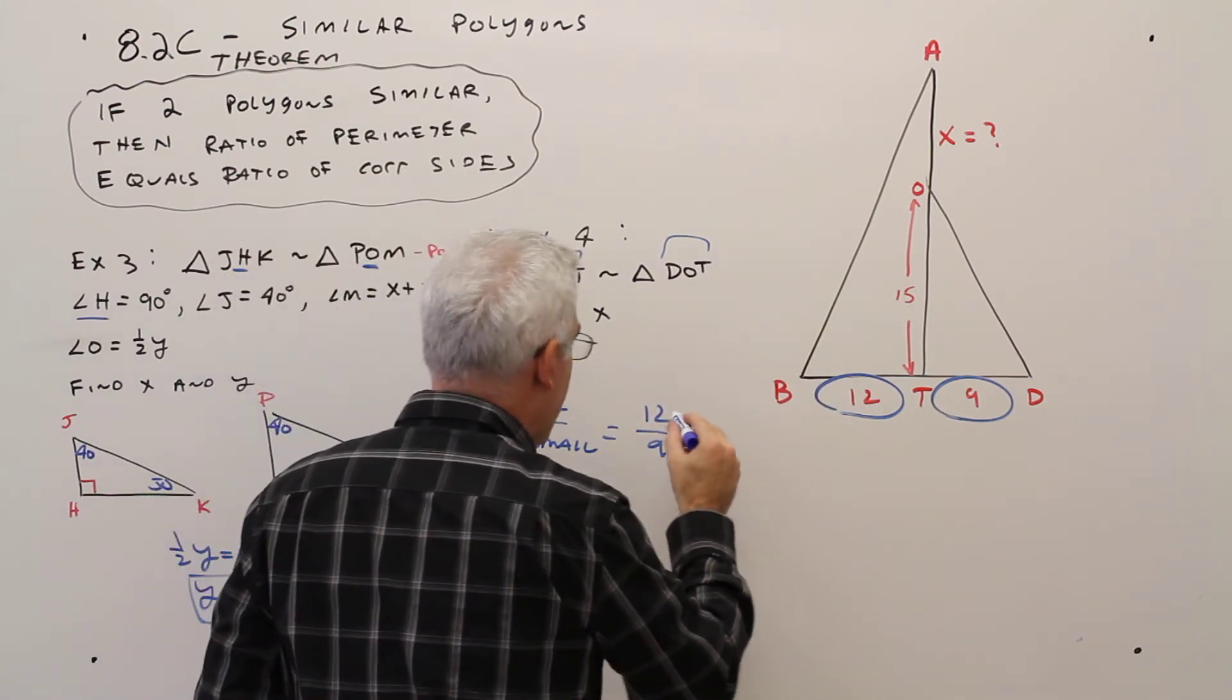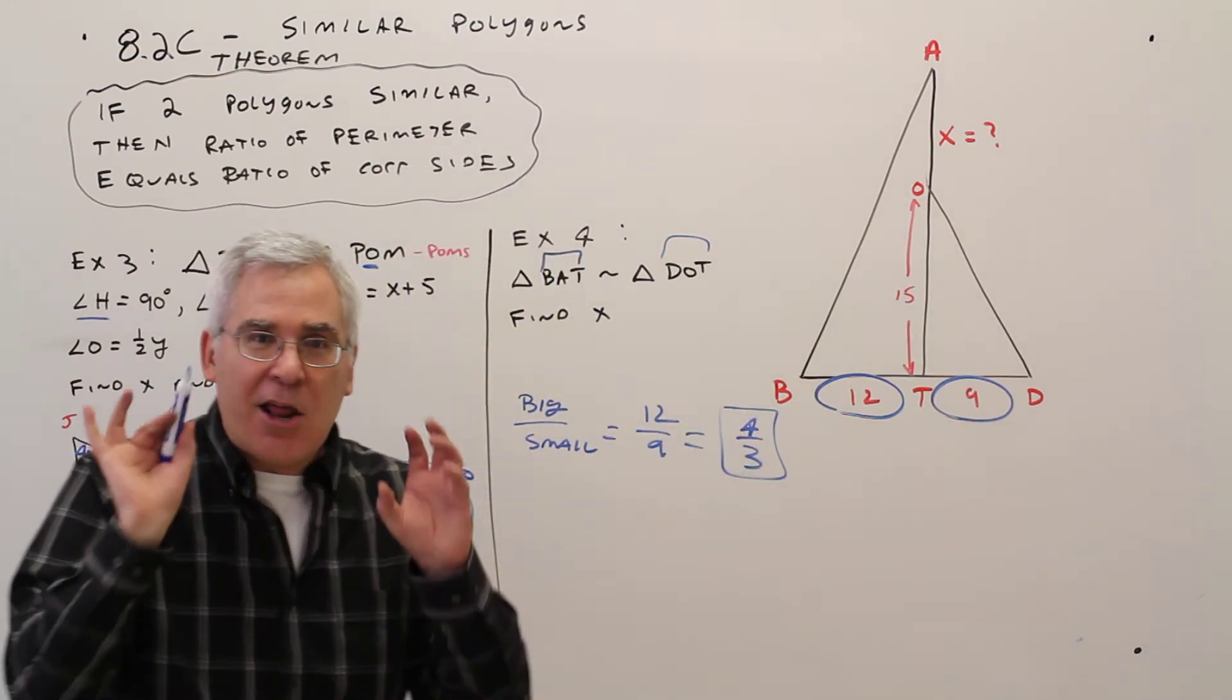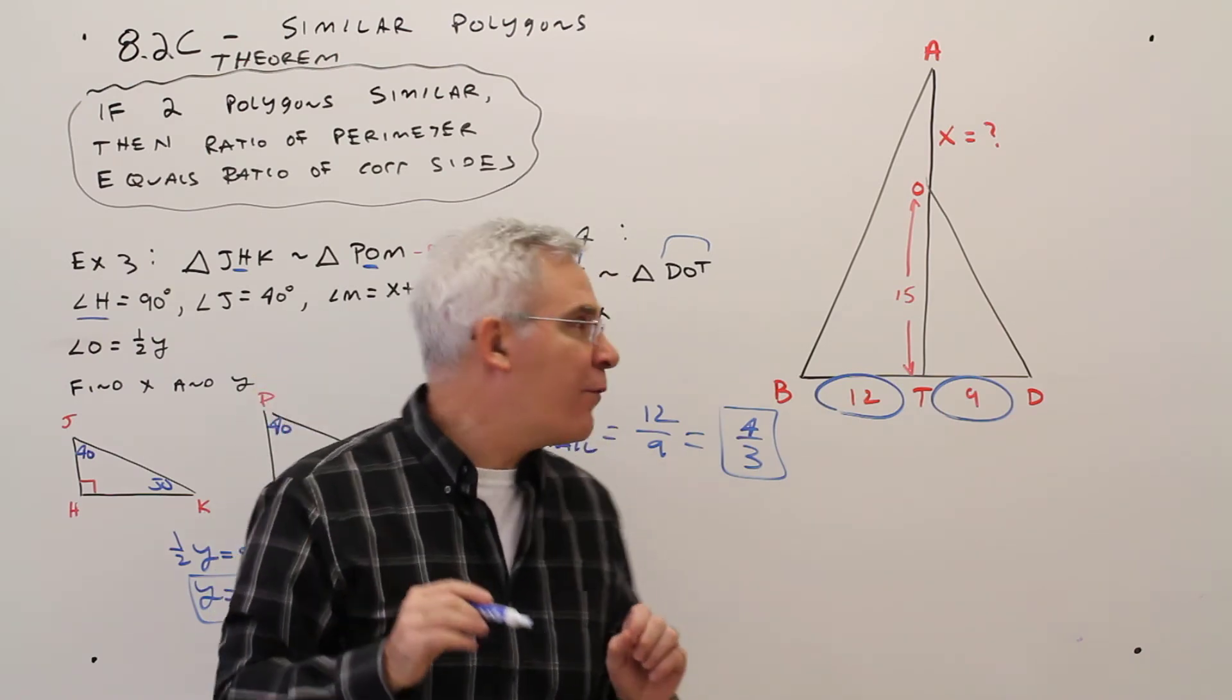Let's reduce that. Divide by 3. 4 over 3. So now I've got a known ratio between corresponding sides, and I can use that for others.